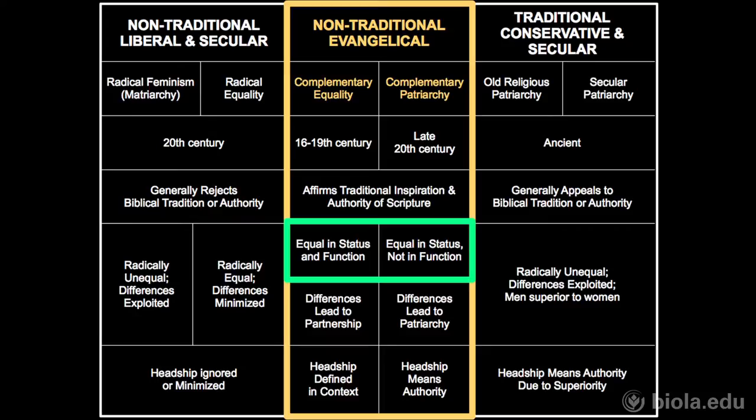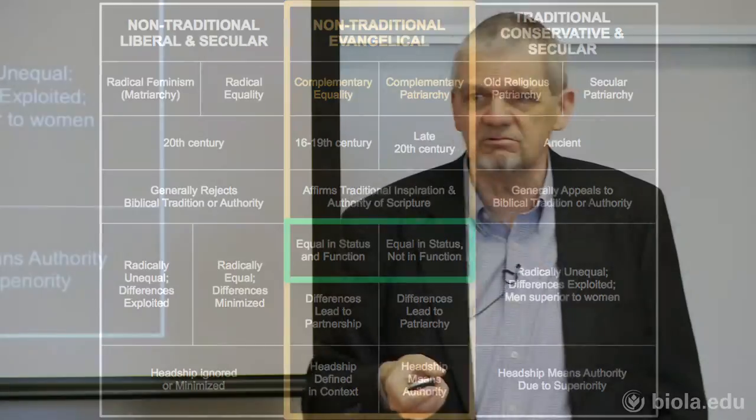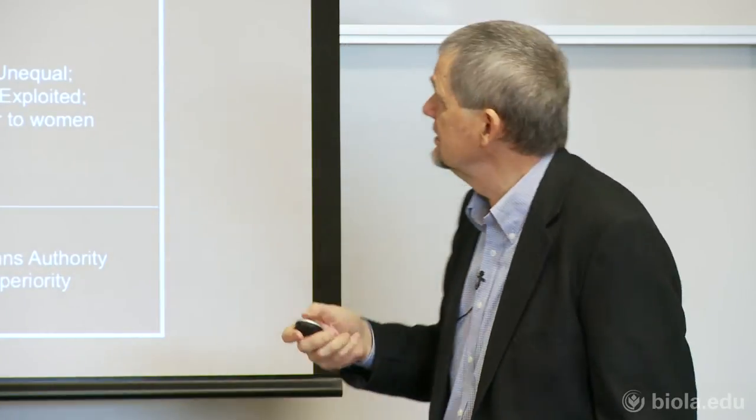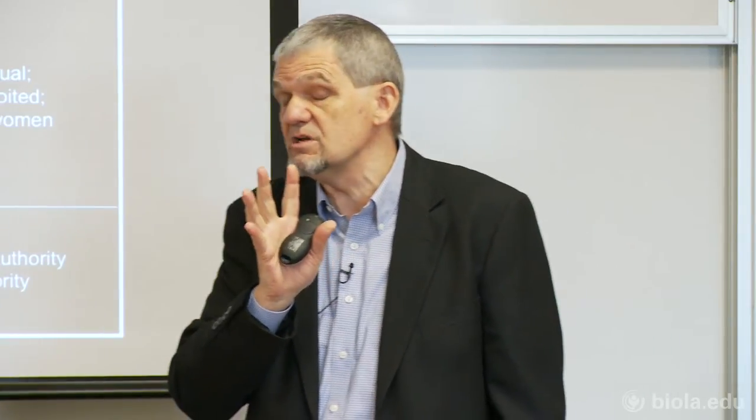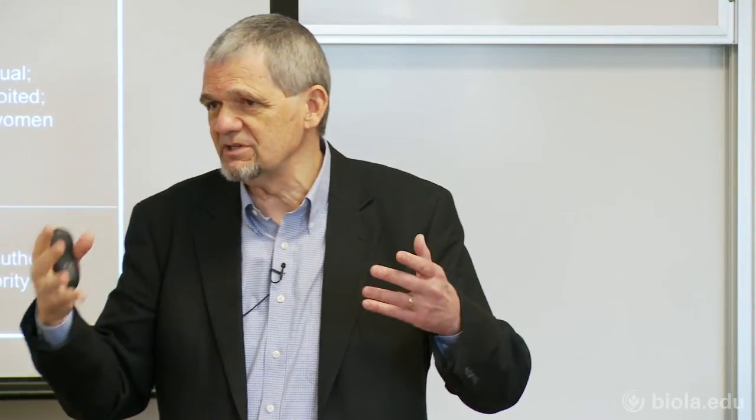On the other side of the chart: radical equality, radical feminism. Radical feminism really should translate to matriarchy — if you want to put patriarchy on one side, it'd be matriarchy on the other. There is a radical feminist position that believes women are superior to men. Studies have been done on corporations where women have been brought into leadership roles, and in every case the corporation's productivity and work environment improved. That statement has a tinge of 'women make things work better.'